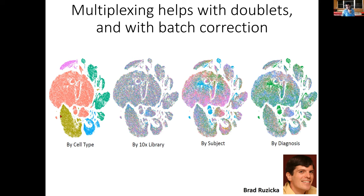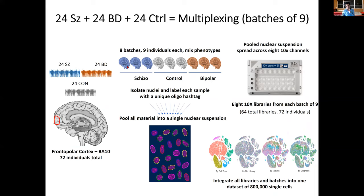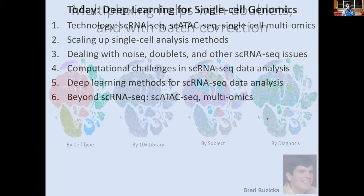Using this multiplexing approach, you can see that t-SNE plots colored by subject, 10x library, or diagnosis show good mixing in most places, indicating effective batch correction. The advantage over separate batch correction per individual is that you don't risk correcting away a bipolar signature from a schizophrenia or control signature. By pooling samples from different phenotypes, you avoid overcorrecting for the phenotypic contribution.